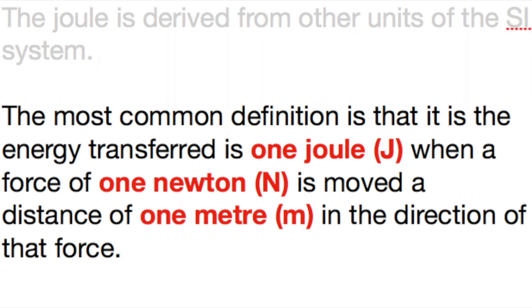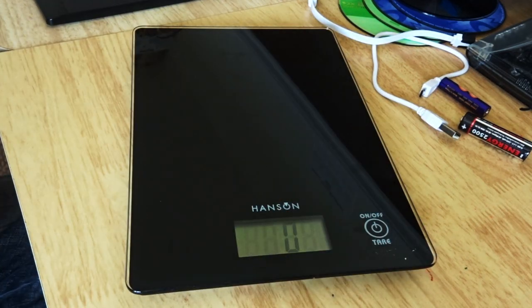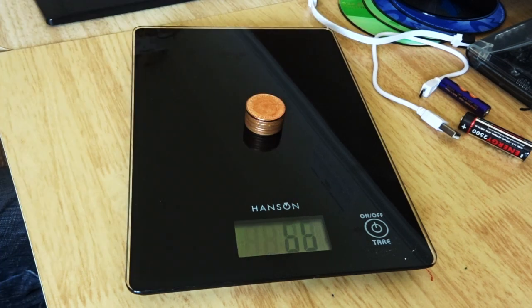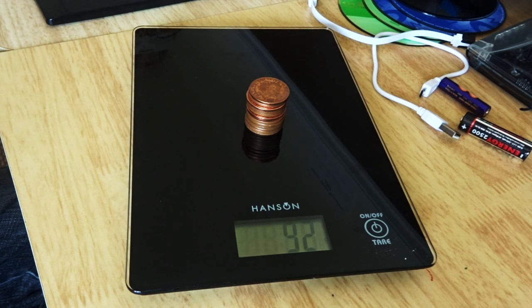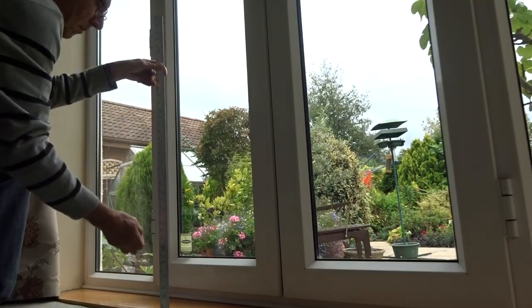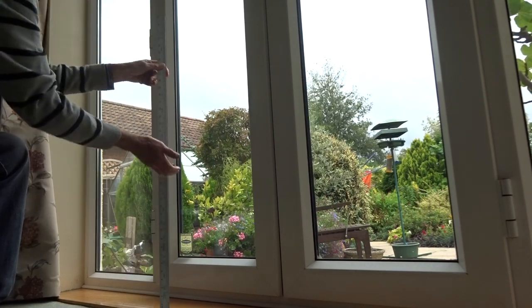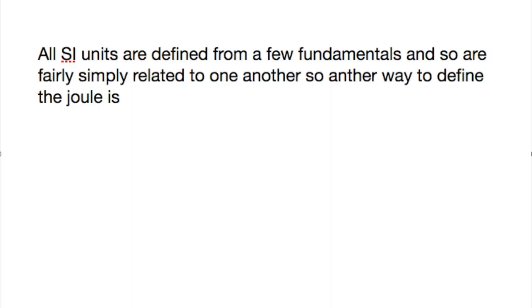To give you a rough idea of how much that is, a mass of 100 grams has a weight in the force due to gravity of around one newton. So if we lift this pile of coins up through a distance of one meter, then we have transferred one joule of energy, we have done one joule of work.